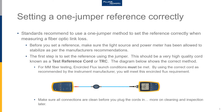A dirty source port can limit the amount of light energy available to make your measurement. If you're unsure how to do this, Fluke Networks has video tutorials available on the correct inspection and cleaning methods on our YouTube channel. Once your instrument is stable and you have inspected and cleaned your cords, connect the source to the power meter in the correct manner and go ahead and set your reference.